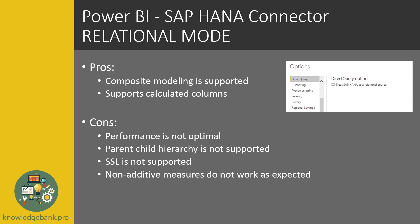A lot of clients try to use relational mode because it supports composite modeling. Composite modeling basically means you can have multiple direct query queries and maybe even some import mode queries, and mash them up in Power BI — whereas that kind of feature is not supported in multidimensional mode. In multidimensional mode, the expectation is all data modeling is done in the SAP layer and Power BI is used just as a visualization layer. Clients who want to use relational mode for this should go to options, select the direct query option, and enable 'treat SAP HANA as a relational source' — though I've not seen anybody successfully implement it in production.